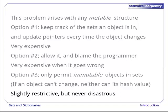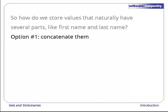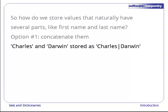But if we can't store lists in sets, what do we do with values that naturally have several parts, like people's names? Again, there are several options. The first is to concatenate those values somehow. For example, if we want to store Charles and Darwin, we'd create the string Charles bar Darwin and store that.